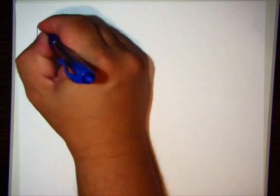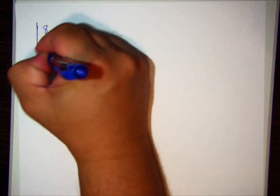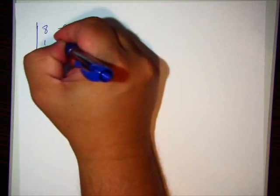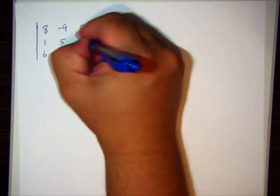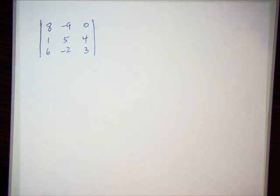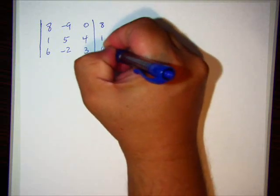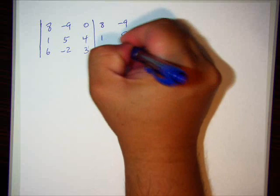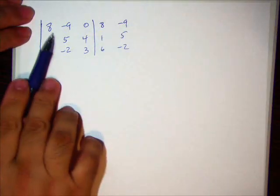I'm going to do one more example. This will be the last example. So once I write the determinant, you can pause it and work it out on your own. See if you get the same answer I do. There is the determinant. Go ahead, pause it. Find the value. Okay. So I'm copying the first two columns. I am multiplying diagonally.